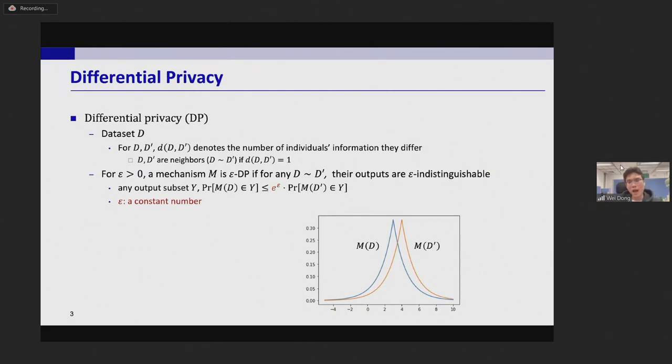And the mechanism M is said to be epsilon DP if for any neighbors D, D prime, their outputs are epsilon indistinguishable. That is, for any output subset Y, the probability of M(D) in Y and the probability of M(D prime) in Y, the different factor is equal to e to the power epsilon. Epsilon is usually a constant between 0.1 to 10.